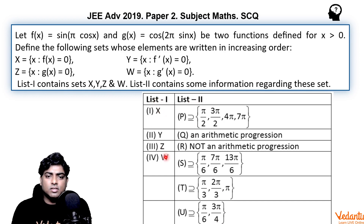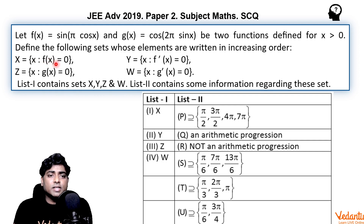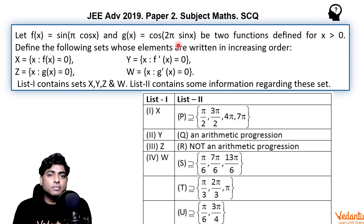There are two lists — List 1 and List 2. List 1 consists of four sets: capital X, capital Y, capital Z, and capital W. X is the set of elements for which f(x) = 0, Y for f'(x) = 0, Z for g(x) = 0, and W for g'(x) = 0. f(x) is defined as sin(π cos x), g(x) as cos(2π sin x), and both functions are defined for x greater than zero.